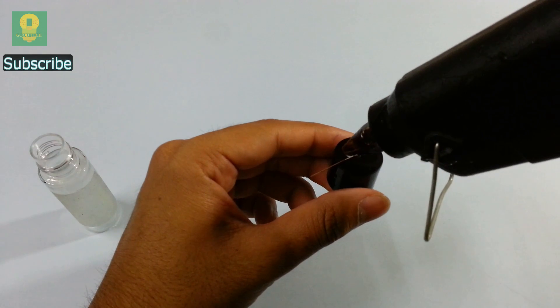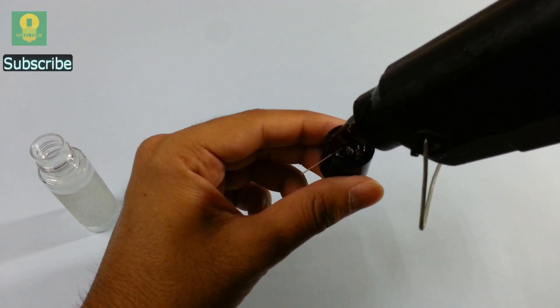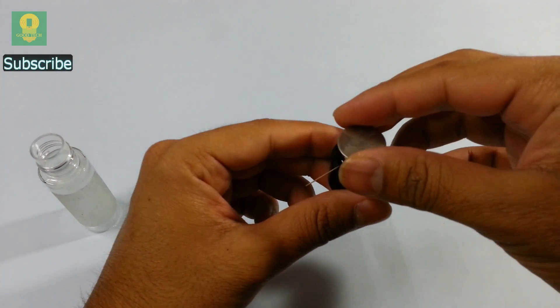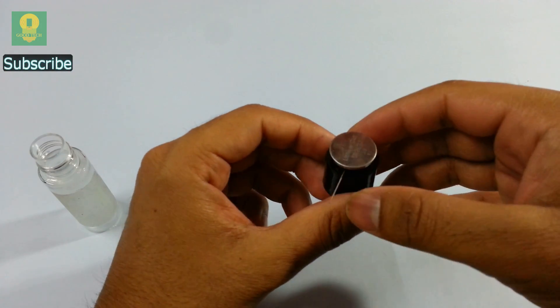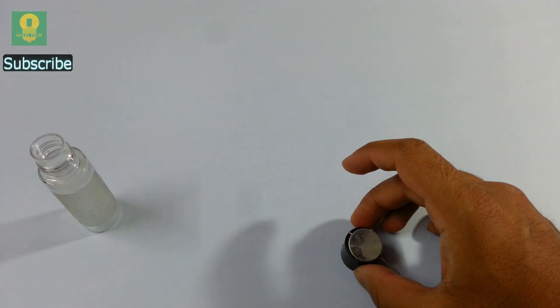Apply hot glue over the cap such that the positive leg is immersed inside the glue whereas the negative leg is slightly above it. Now place the coin cell over the glue so that the negative leg of LED is in contact with the cell. Keep it to dry for some time.